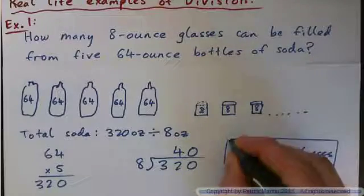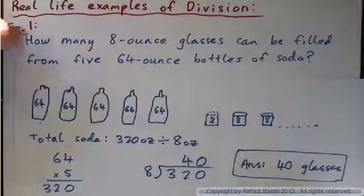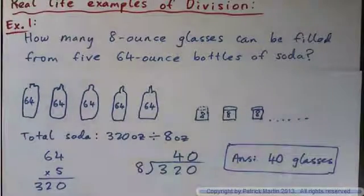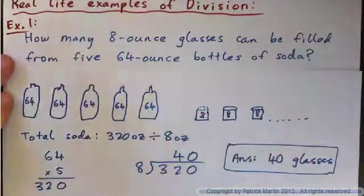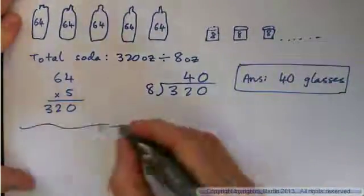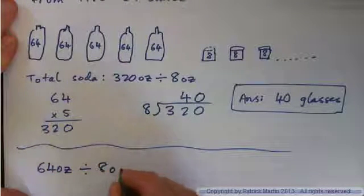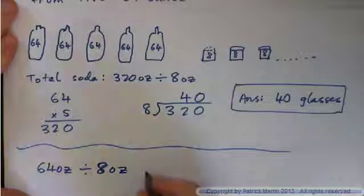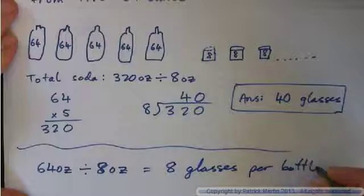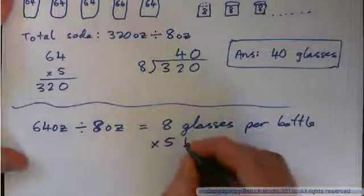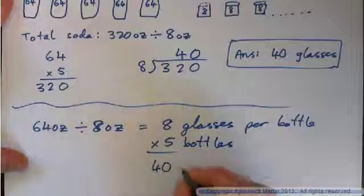Any other ways of figuring this out? Another way would be to figure out how many 8-ounce glasses can be filled from one bottle, and then multiply that by 5. So we could say: take 64 ounces in a bottle, divide that by 8 ounces in a glass. 64 divided by 8 is 8, so that's 8 glasses per bottle. Then we multiply that number by 5 for 5 bottles, and that gives you 40 — so 40 glasses total.